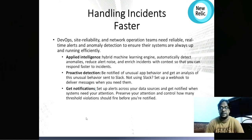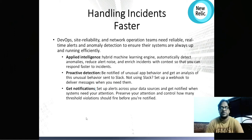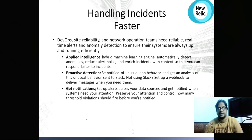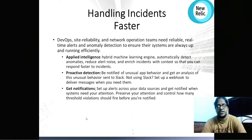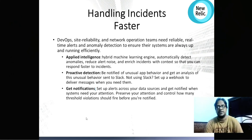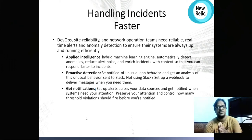Proactive detection checks for unusual app behavior and can send analysis to Slack via webhook. It delivers messages when you need them. You can set up notifications for your data sources and configure thresholds — for example, only get notified after an error occurs five or ten times — so you control how many threshold violations trigger a notification.